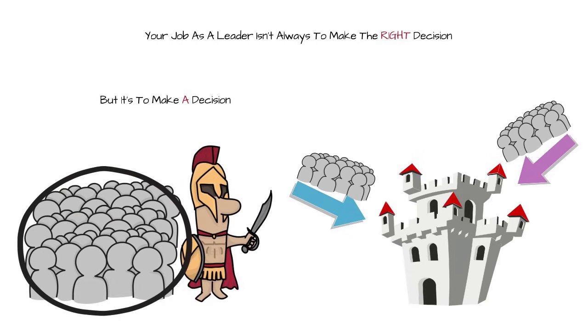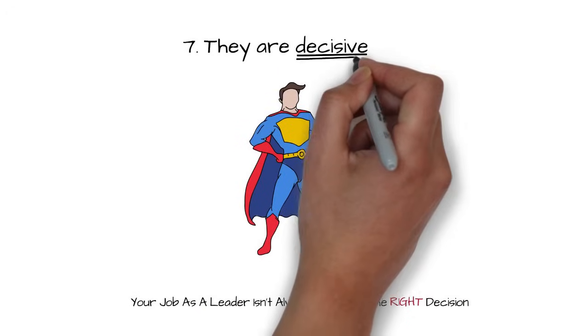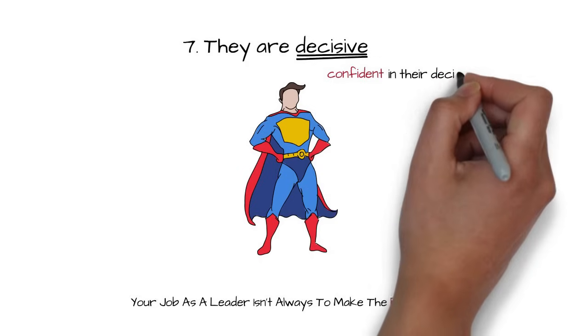Wrong decisions could be fixed, but a scattered team is a recipe for disaster. Great leaders are decisive and confident in their decisions.